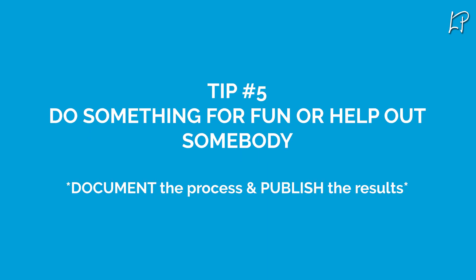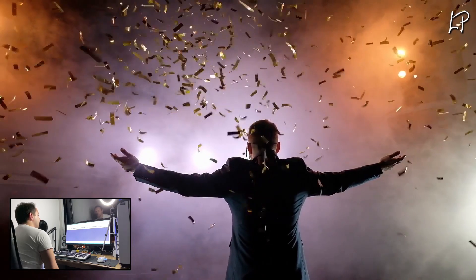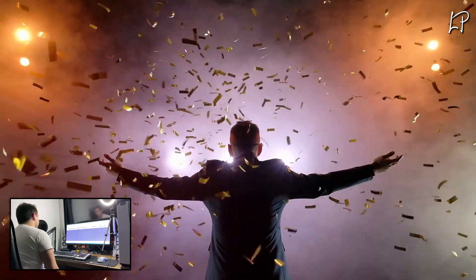Tip number five: do something for fun — a private project or help somebody out for free. Of course, minimal work, and don't cater to freeloaders. Then document that process and publish the results as portfolio items. Trying all of the tips mentioned in this video would leave you with at least five to ten portfolio items, and that's more than enough to start freelancing. Now get out there and grab that first paid project. Good luck.